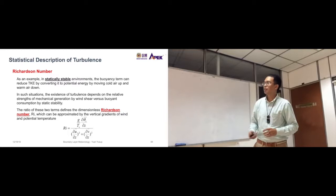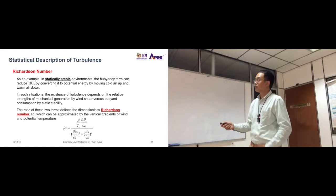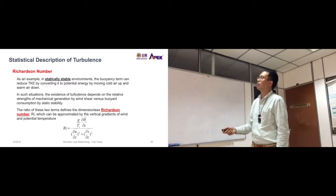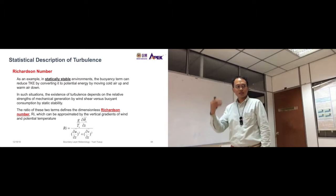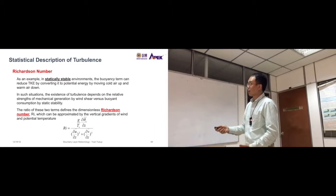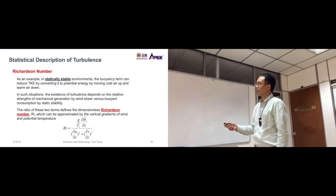So as an example in statically stable environments or a stable atmosphere, the buoyancy term can reduce TKE by converting it to potential energy by moving cold air up and warm air down. So in stable environments we know that buoyancy is low or turbulence is suppressed. In stable environments this buoyancy is used to suppress the turbulent kinetic energy.